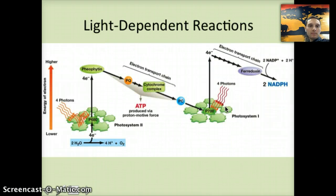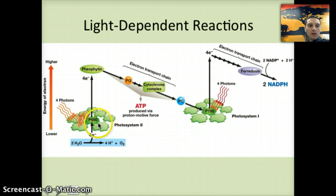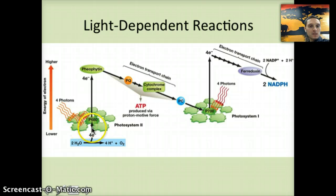The light-dependent reactions are all dependent on light. They take place in the thylakoid of the chloroplast. Within the thylakoid, there are chlorophyll molecules that are grouped together into something called a photosystem. This first one shown here is actually called photosystem 2.